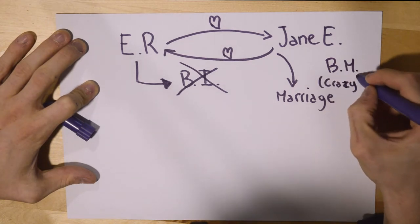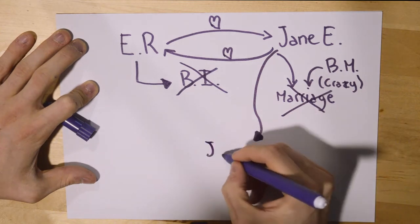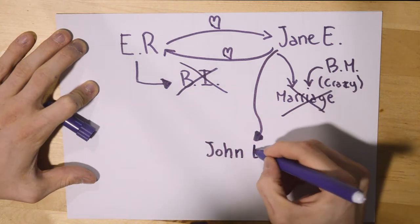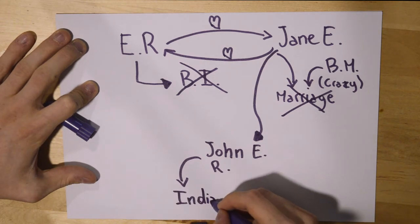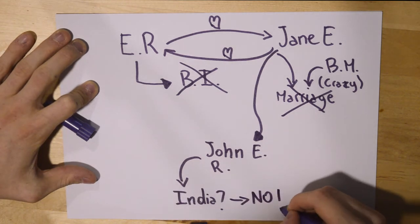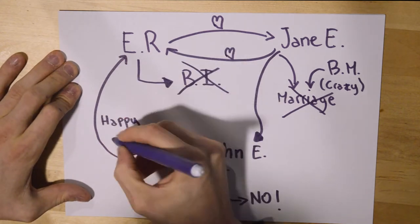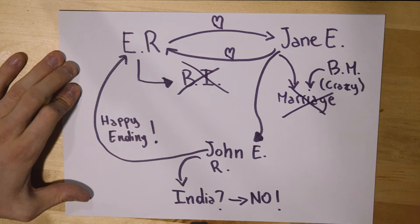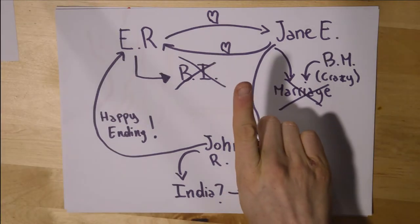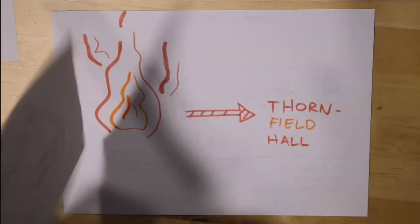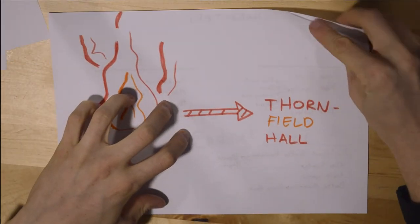But Bertha Mason gets in the way — she is Edward's crazy first wife. So Jane escapes and meets John Rivers and his sisters. John asks her to go to India but she replies no, so she gets back to Thornfield and gets married with Edward. There's a happy ending.